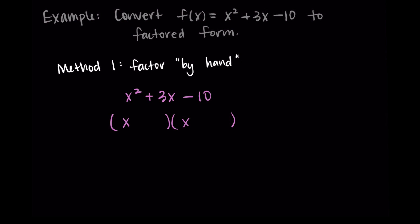I'm not going to go through every process for how you do this — there are multiple ways of teaching it and I'll provide links to other videos. But we'll go through one example here. I'm looking for two numbers that multiply to negative 10 but add to three. Thinking about it, some combination of five and two where one is negative — positive five and minus two gives us positive three. So this factors to x plus five times x minus two.